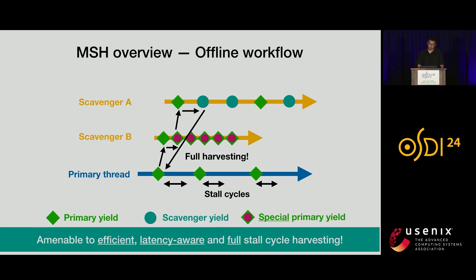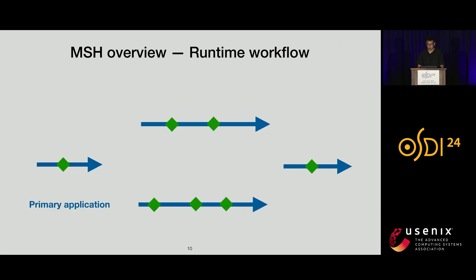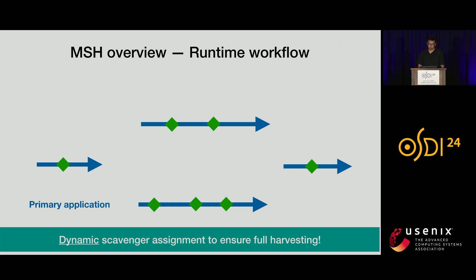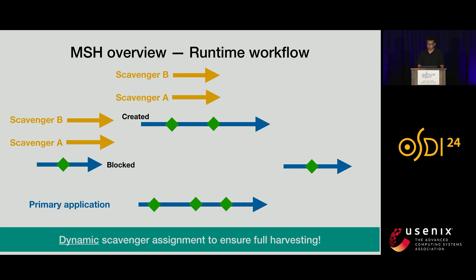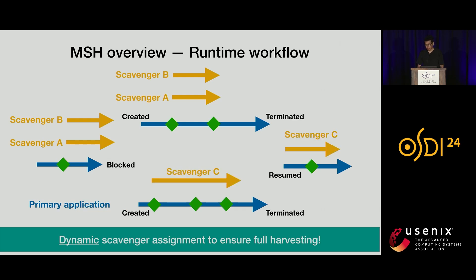In short, in the offline part, we transform the binaries of the scavenger and primary so that they are amenable to efficient, latency-aware, and full stall cycle harvesting. In the runtime, what we need to handle is that the primary binary usually has multiple threads with its own internal threading structures. MSH transparently and dynamically assigns scavengers among primary threads to ensure full harvesting. For each active primary thread, we assign it a set of scavengers, and the runtime monitors the state of the primary thread by intercepting pthread library calls and performing corresponding actions, such as migrating scavengers from a blocked primary thread to a newly created one.